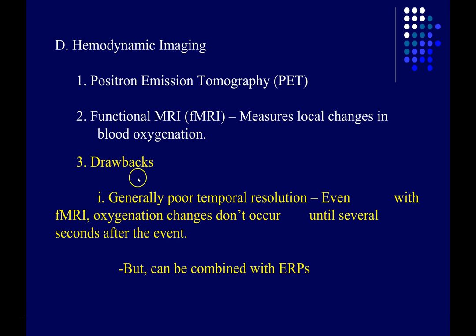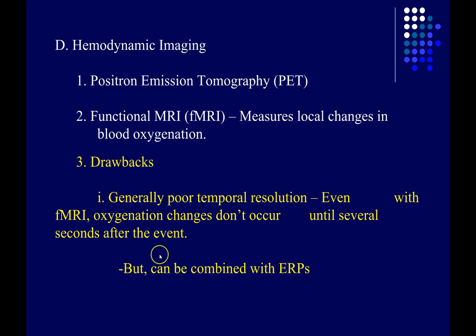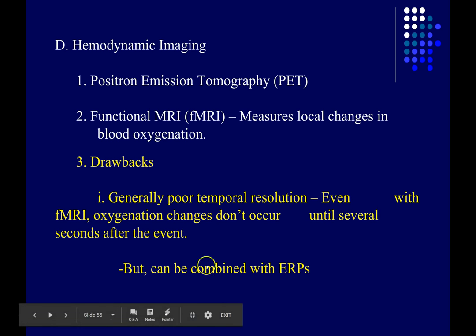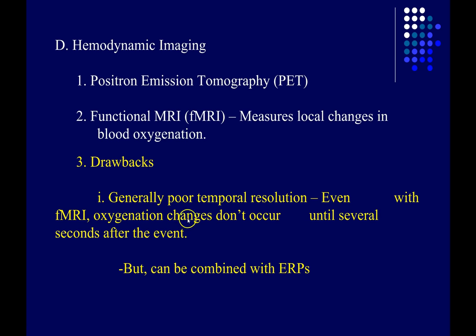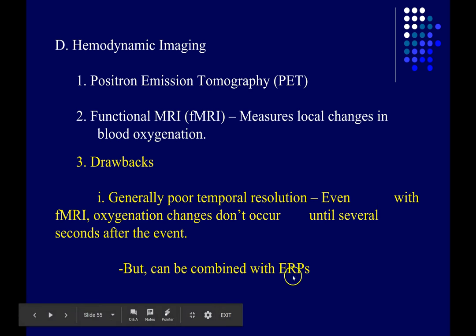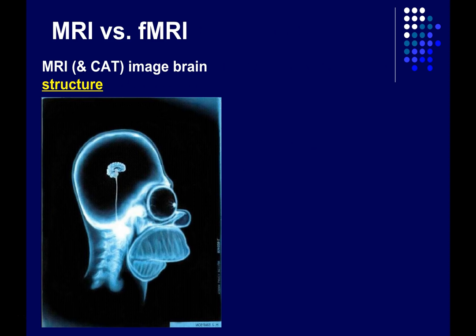fMRI has pretty poor temporal resolution, especially compared to ERPs, which can resolve down to a ten-thousandth of a second. Even with functional MRI, oxygen changes don't occur until several seconds after the brain activity changes. If you're careful, sometimes you can combine functional MRI's high spatial resolution with ERP data's high temporal resolution — but from experience, that's very difficult to do.